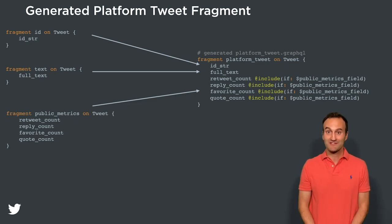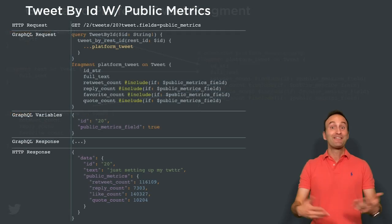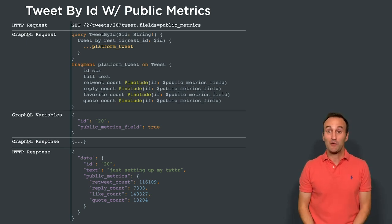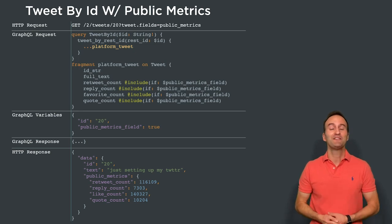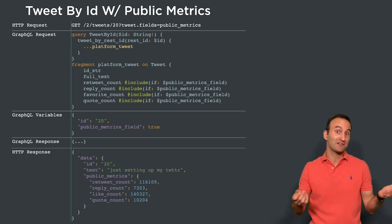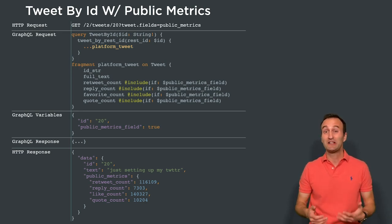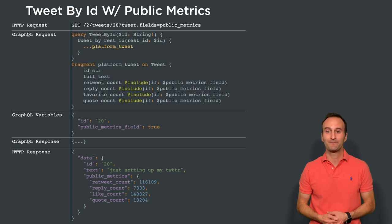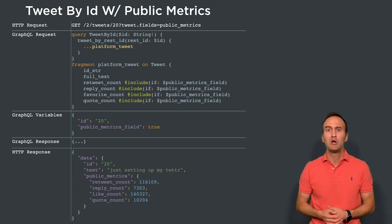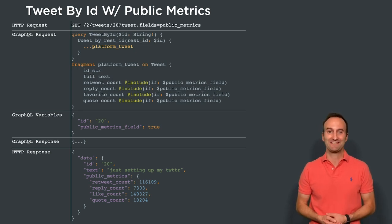Let's see what a customer request looks like for this new optional field — first, tweet by ID. At the top of the screen, you can see an HTTP request requesting our new public_metrics field. Because an optional field is now specified, we set an additional GraphQL variable named public_metrics_field to true, which will enable our GraphQL @include directives to include the additional fields we need to query. At the bottom, we can see the individual requested tweet now with the new public metrics data included.